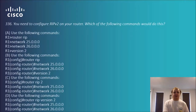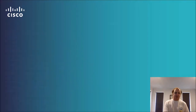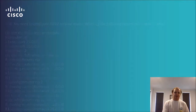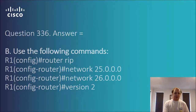Question 3.36: you need to configure RIP version 2 on your router — which of the following commands would do this? Feel free to pause the video to read the four options. The answer is B. The correct sequence is: enter global configuration mode, use the 'router rip' command to enter router config mode, set the networks, and then define the version at the end. In option A you're not in the right mode to begin with. Option B is syntactically correct — getting into global config, entering router config with 'router rip', defining the subnets, and specifying the version last.